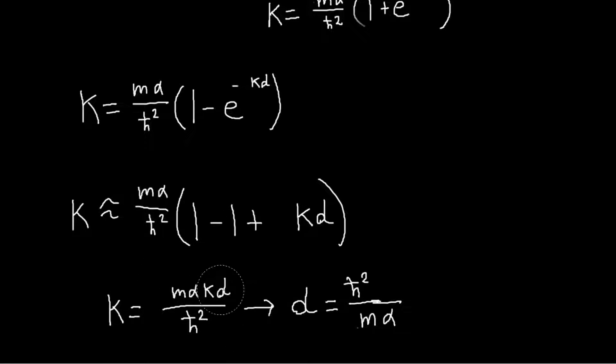And I have a k on both sides, so those both go away. And this just tells me what my value of D is when k is very small.